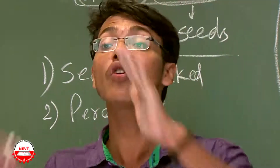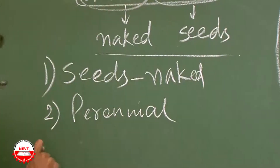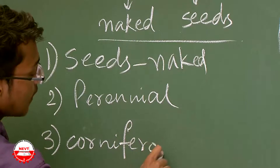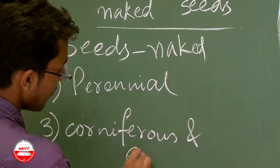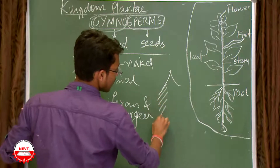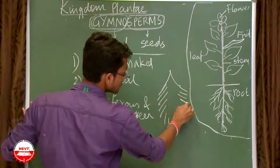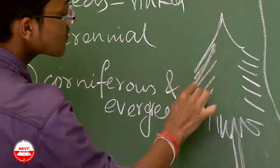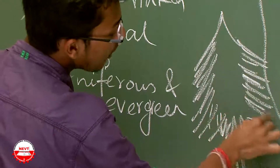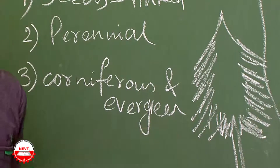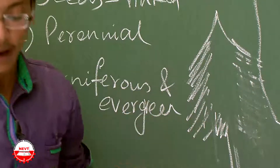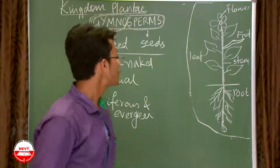Another important property is that gymnosperms are evergreen — they are always green in structure. They are also coniferous, meaning they have a cone-like structure similar to a Christmas tree. They are usually found in cold places, so the conical shape ensures that if snow falls, it slides off and does not settle on the plant.